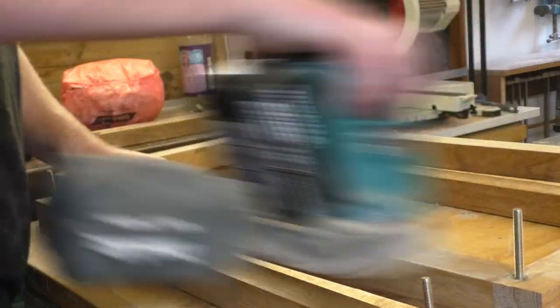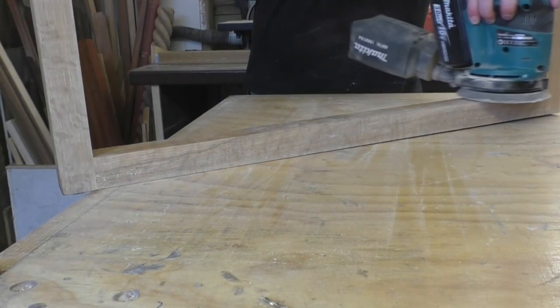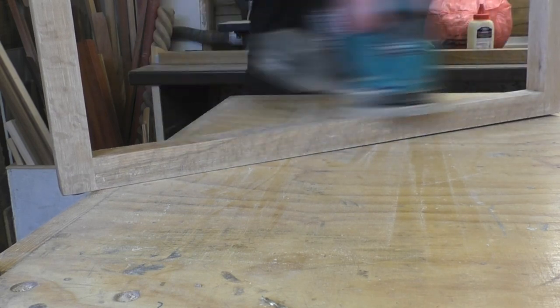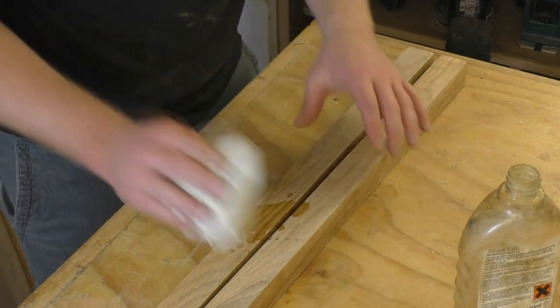Next I sanded the frame with 120 grit discs on my random orbit sander. There were a few blemishes and small paint marks on the legs, so I just did this to clean them up and get everything nice and smooth. I applied some teak oil to the frame which really brought out the grain in the oak nicely.